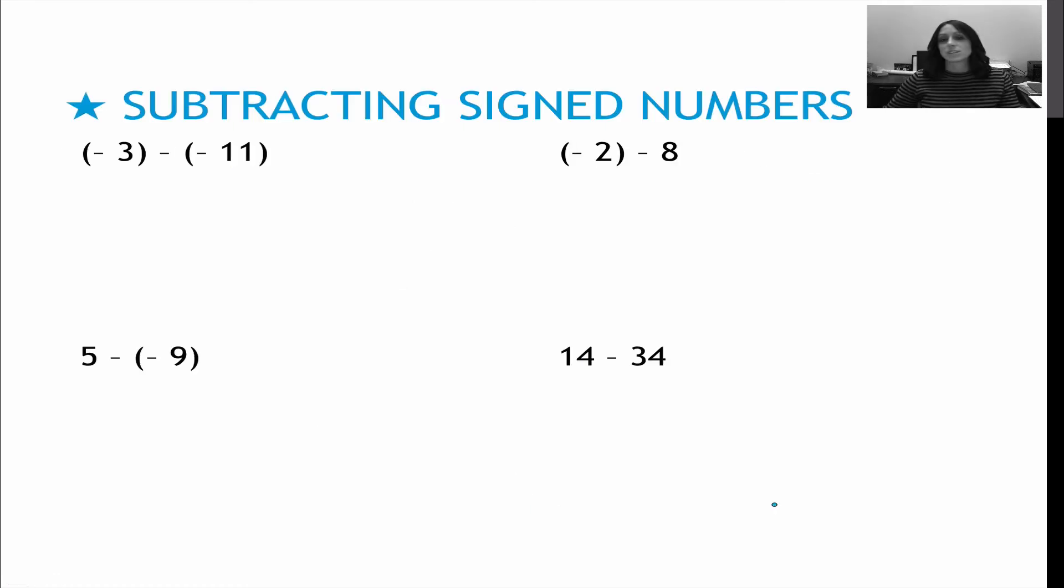Here are some for us to try together. All of these are going to start as subtraction, so I'm going to keep flip change. Negative 3, and then I'm going to keep flip change, so that's negative 3 plus positive 11. These now have different signs, this is negative, this is positive, their difference is 8. Bigger number is positive, so my answer is positive.